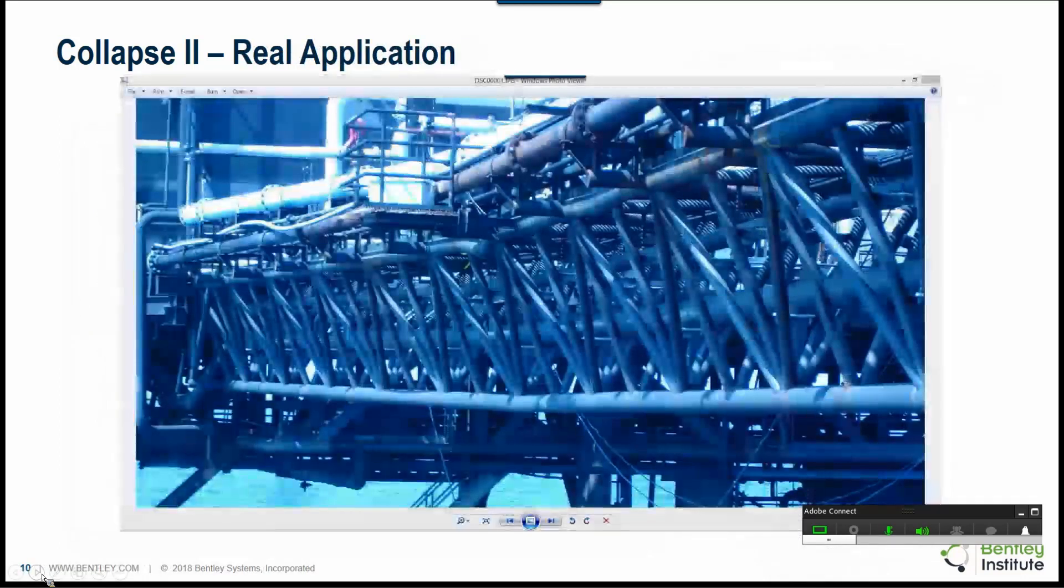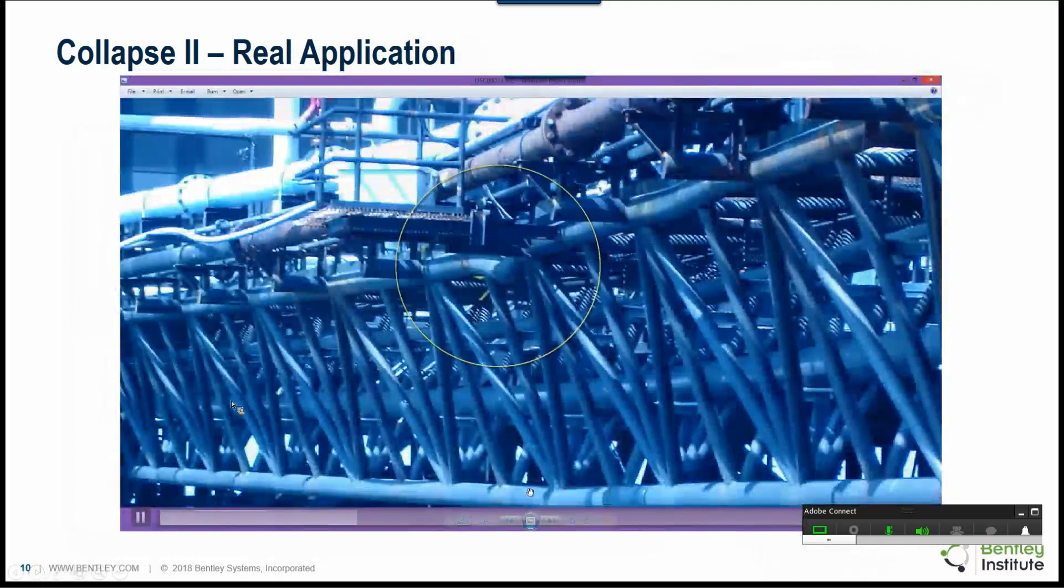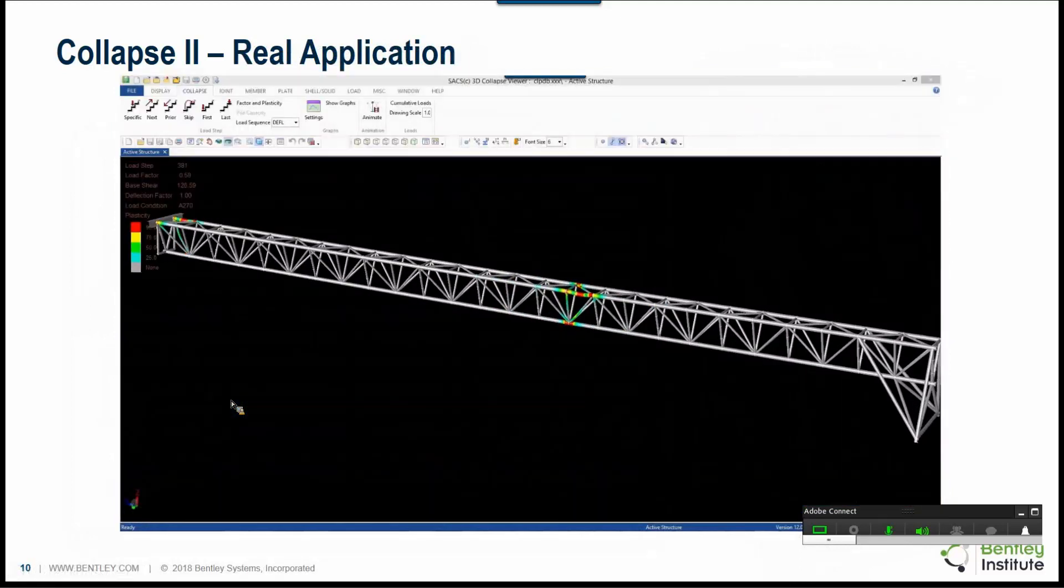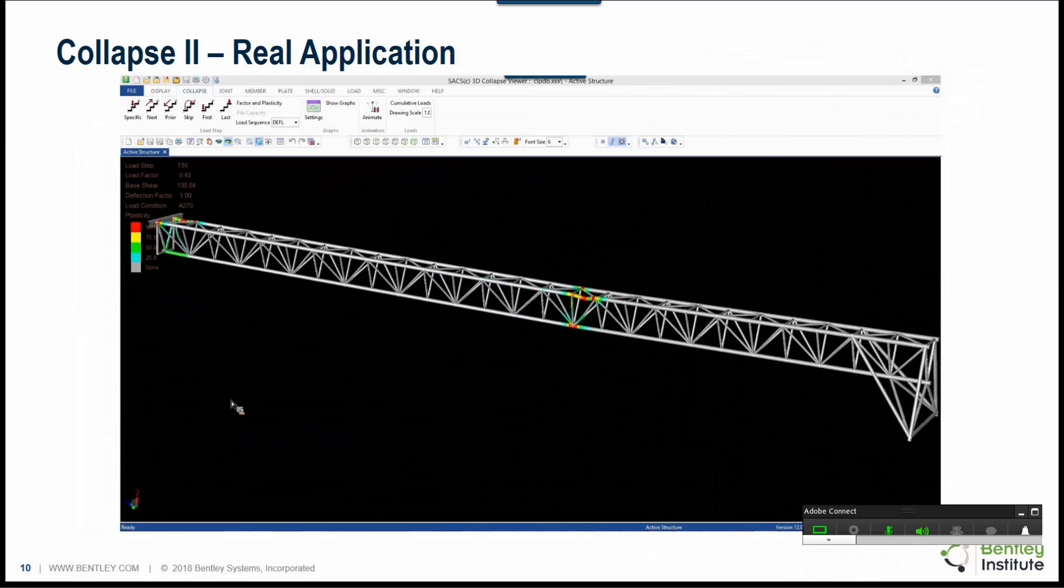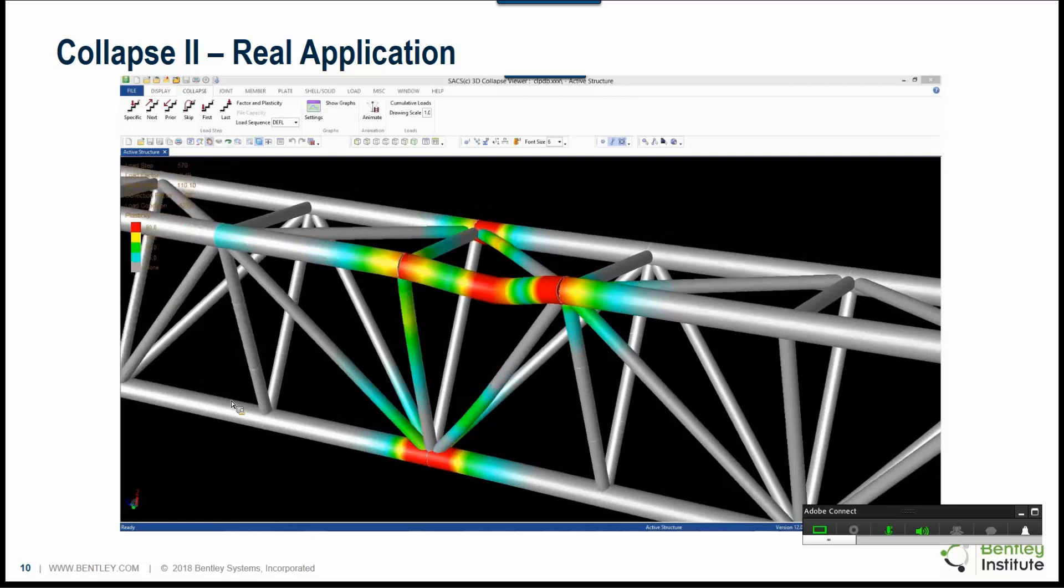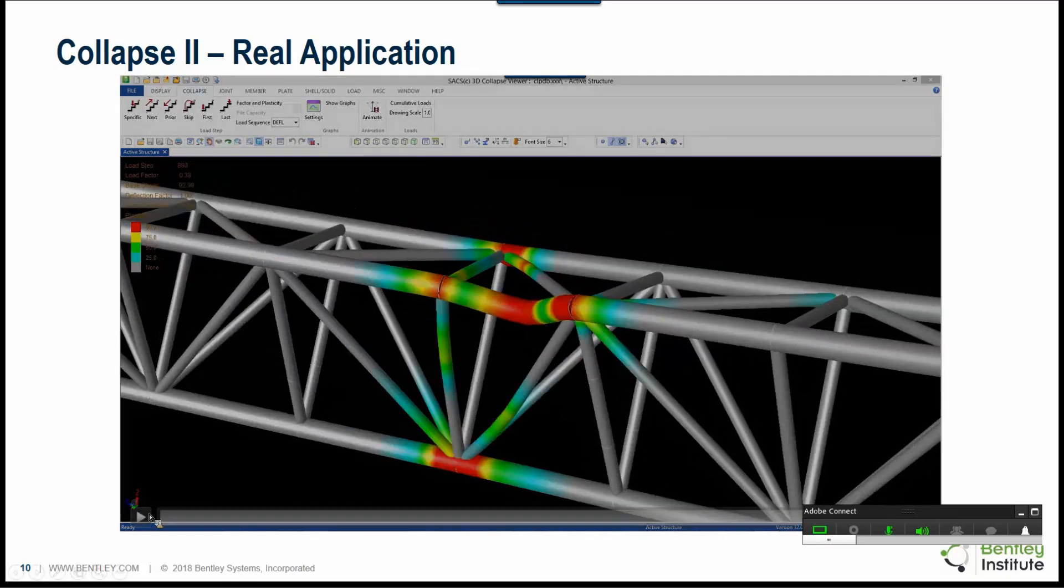This is a real case application. In this case, we have a bridge between two jackets which was damaged in a hurricane. And the new collapse now predicts the extremely large deformations that had occurred very accurately and shows the member buckling as in reality.